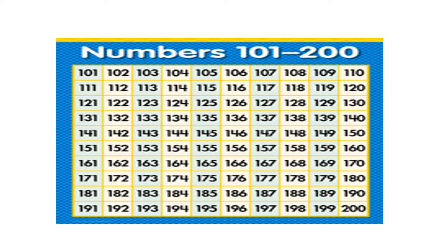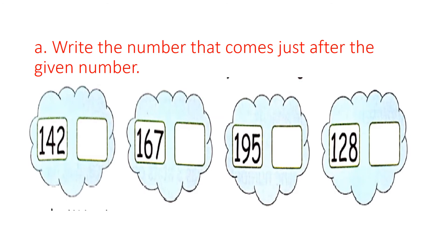Now let us see how to write before, after, and between numbers. First one: write the number that comes just after the given number. The given number is 142. Which number comes after 142? It is 143. Very good children! Next: 167. Can you guess which number comes after 167? It is 168.